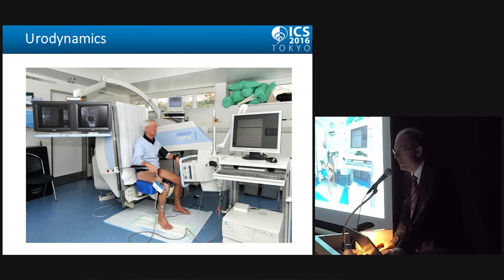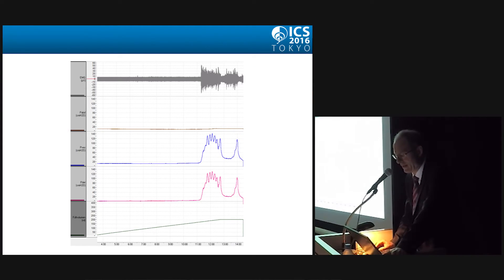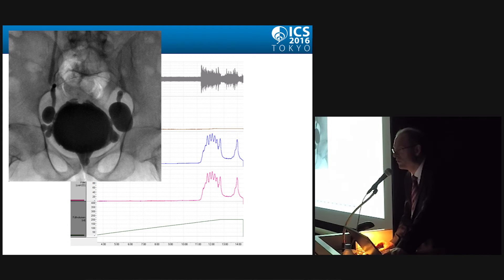And finally, urodynamics — to assess the dysfunctional pattern of the underlying neurological problem. Shown here is the classical picture of detrusor sphincter dyssynergia. Ideally, the urodynamic investigation is combined with X-ray, ideally as video urodynamics. Here is a patient at risk for upper urinary tract damage due to reflux caused by detrusor sphincter dyssynergia, with pseudodiverticulum, diverticulum, and trabeculation.